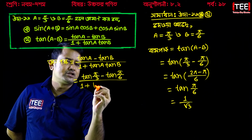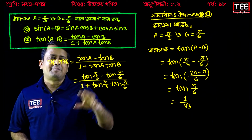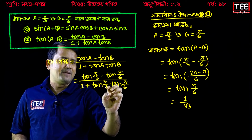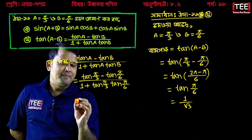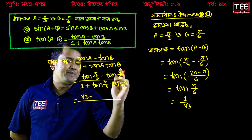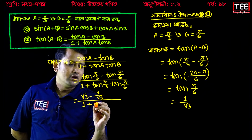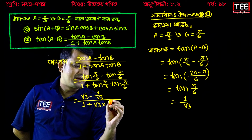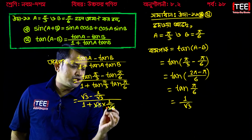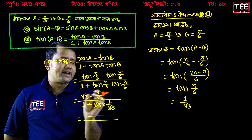1 plus tan(pi/3) · tan(pi/6). That is 1 plus root 3 times 1 by root 3. We have to calculate the value: root 3 and 1 by root 3 cancel out, so we get 1 plus 1.